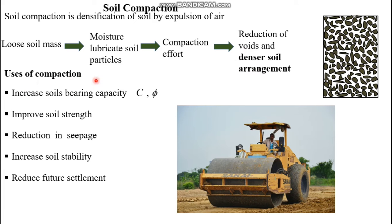There are different uses of compaction. First, it increases soil bearing capacity, which depends on the shear strength of the soil. Shear strength in turn depends on the cohesion and angle of internal friction of the soil. Compaction increases both cohesion and angle of internal friction, thereby increasing bearing capacity. Compaction also increases the stiffness of the soil mass, which improves soil strength.